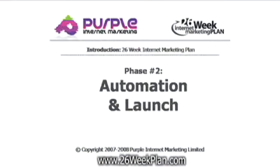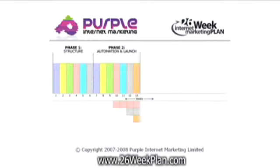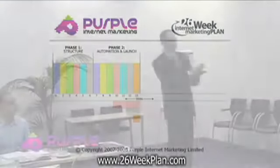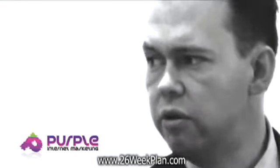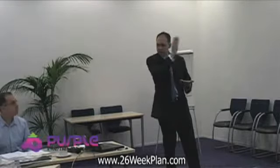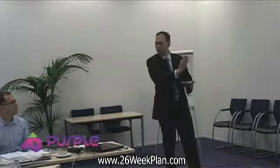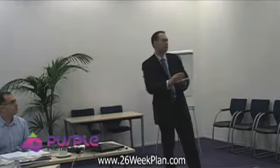Moving on to phase two: automation and launch. There are seven key aspects to this area. With phase two, we start to build in a few processes that should be done every week. From week ten onwards, I'll go over different processes that should be part of your internet marketing strategy every week, since some phases are one-off tasks and some should be replicated weekly for the best possible benefit.